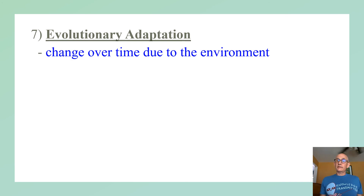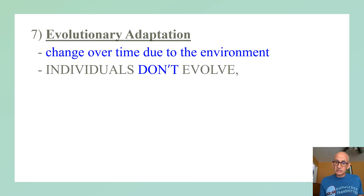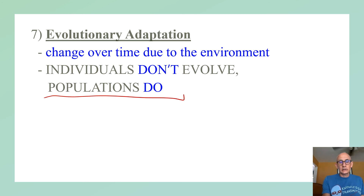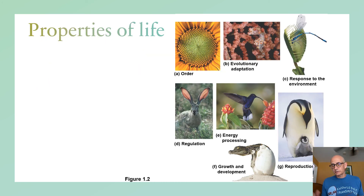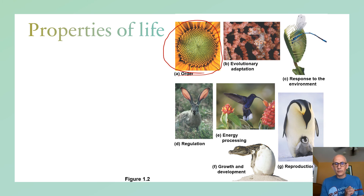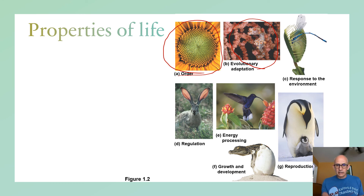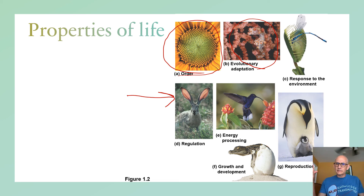Then of course we have evolution — the change in the genetic structure of a population, not an individual, over time, so that the population adapts to the environment. We'll cover lots of evolution later. Examples include the inside structure of a sunflower showing evolutionary order, a seahorse that looks like the coral behind it as an evolutionary response to the environment, and a desert hare with giant ears containing visible veins and arteries for heat dissipation — an evolutionary adaptation that helps with homeostasis.